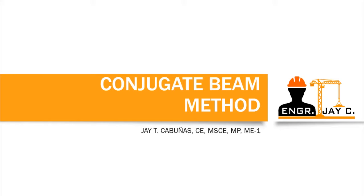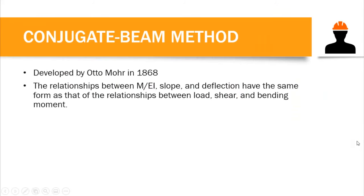What is the conjugate beam method? The conjugate beam method was developed by Otto Mohr in 1868. The relationships between the moment equation, slope, and deflection have the same form as the relationships between load, shear, and bending moment. In other words, the relationship between the moment equation, slope, and deflection is the same as that between load, shear, and bending moment.